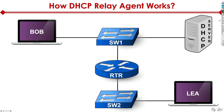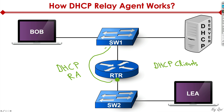This is where the DHCP relay agent comes in. We set up a DHCP relay agent on the router interface pointing toward the DHCP clients. When those clients send a Discover broadcast, it's received on that interface and transparently passed along to the rest of the network until it reaches the DHCP server. The DHCP server can then respond back to the device that sent the initial IP address request. That's how DHCP relay agent works.